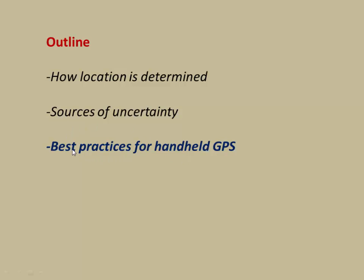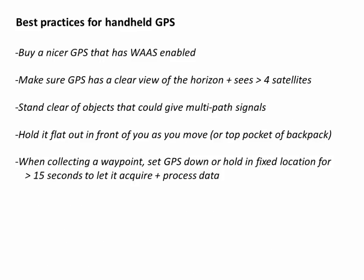Here are best practices for using a handheld GPS in the field. First, get a GPS that has WAAS enabled. Make sure it has a clear view of the horizon and can see at least four satellites. Stand clear of objects that could cause multipathing — watch out for buildings and trees, anything that could bounce the signal. When you're moving, hold the GPS flat out in front of you so you're not multipathing off your own body.